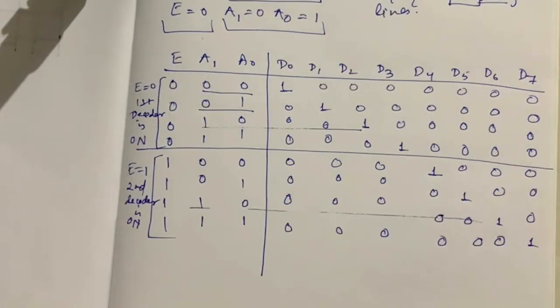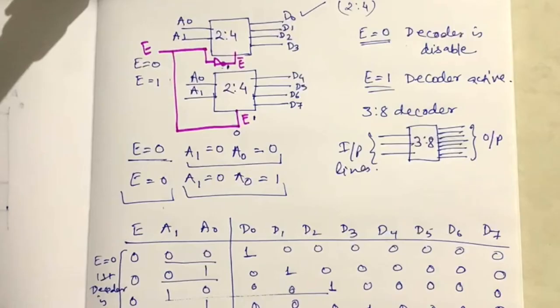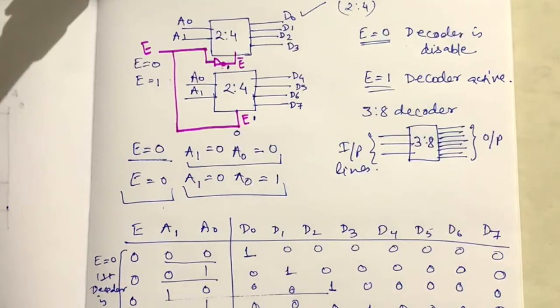So this is the truth table for the 3-to-8 decoder. If the video was helpful to you, please like and share the video with your friends, and please subscribe to my channel. Thanks for watching!